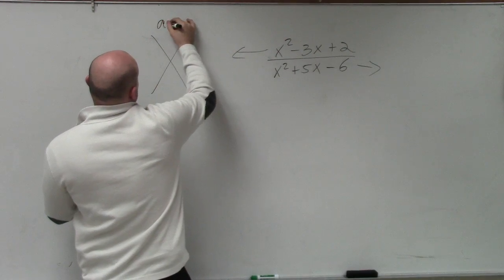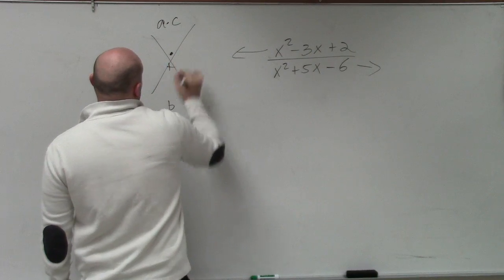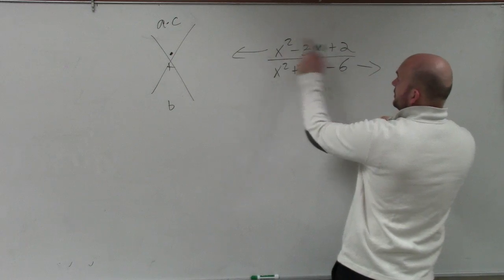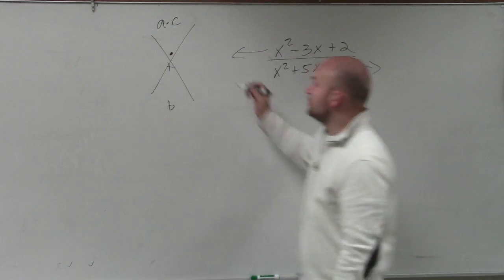If I want to factor this out, I would do a times c and b. What two numbers multiply to give you a times c, but add to give me b? Remember, a is our coefficient of x squared, and c is our 2. So we have 2.